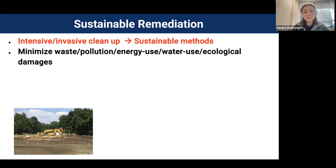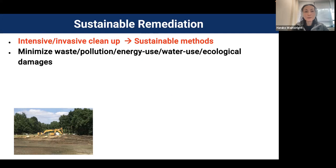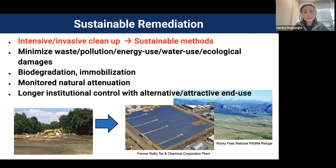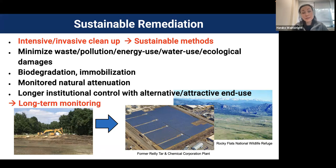Sustainable remediation uses biodegradation and in-situ immobilization. If there is no impact to public health now or in the future, we can use monitored natural attenuation. This means sites will have longer institutional control, but we can develop alternative and attractive end uses — for example, putting solar panels without disturbing the soil, or creating an ecological park. That requires long-term monitoring to ensure residual contaminants remain stable.